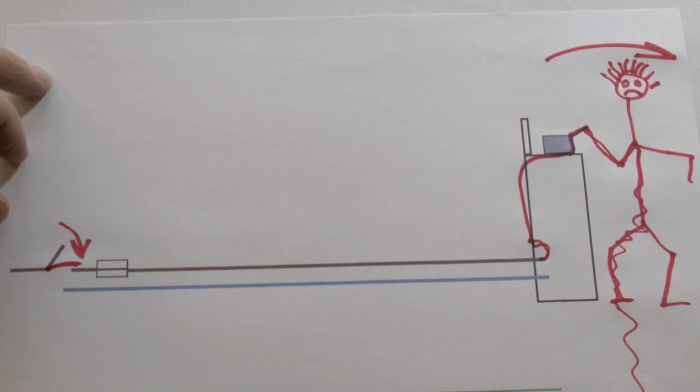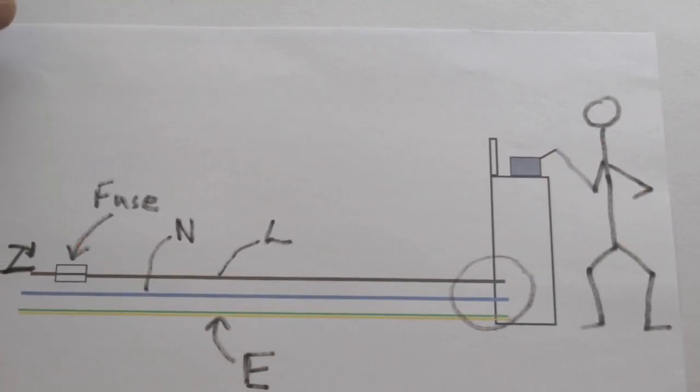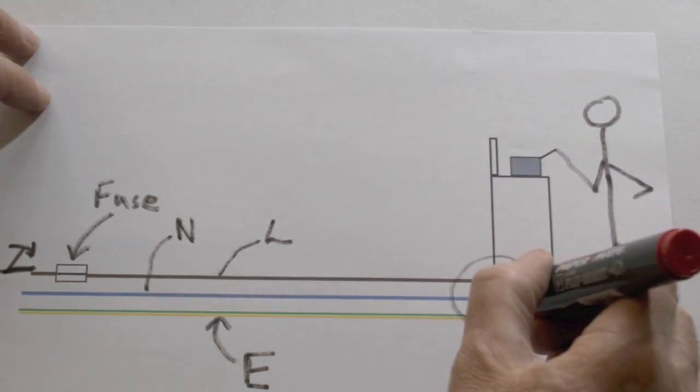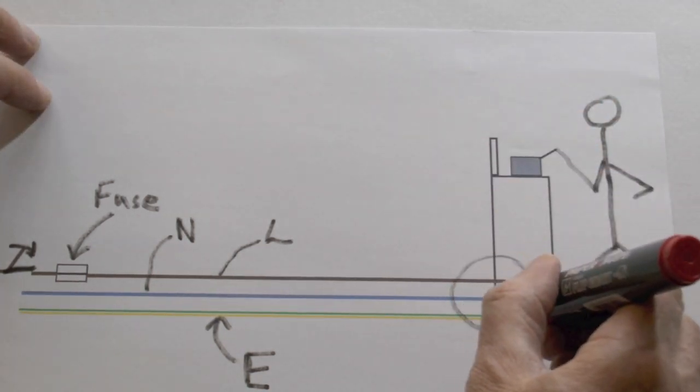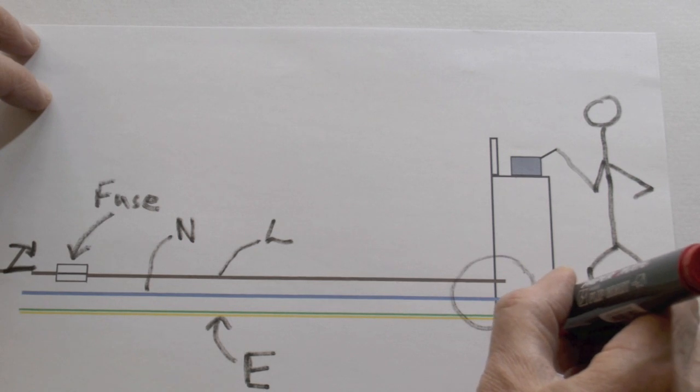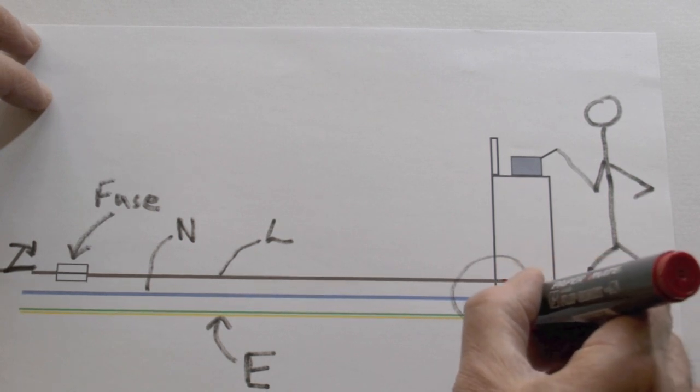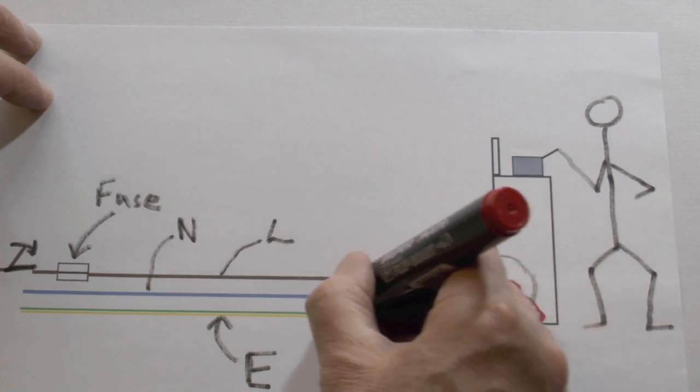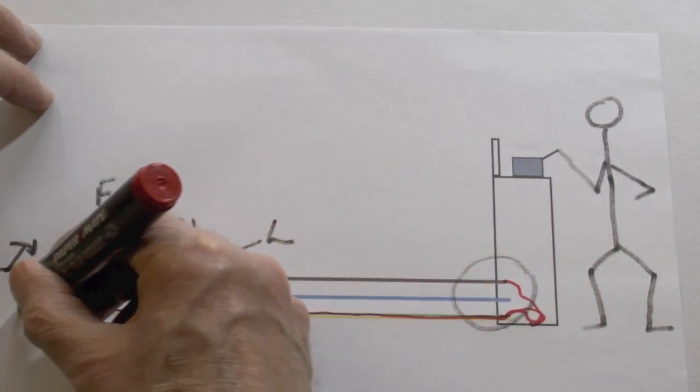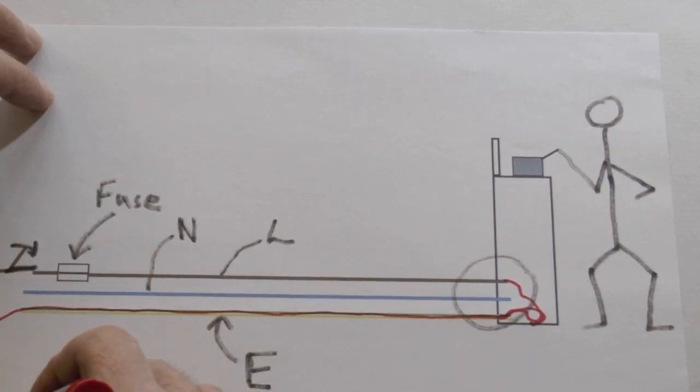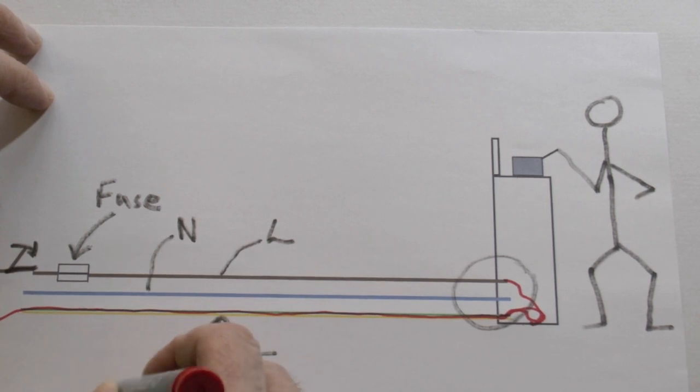The earth wire can avoid this dramatic sequence. If there is a fault in the cooker, then instead of travelling through the person, the electricity will simply travel down the easy path which is the earth wire - a thick copper wire connected to the ground. That will be a large current, and because it's a large current, that overload will cause the fuse to melt and then cut off the electricity.